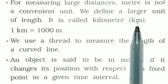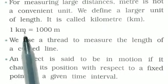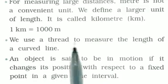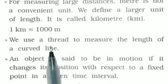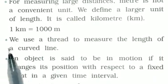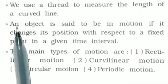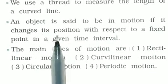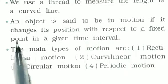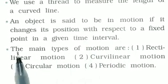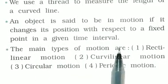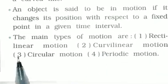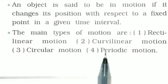For measuring large distances, we use kilometers. An object is said to be in motion if it changes its position with respect to a fixed point in a given time interval. The main types of motion are: rectilinear motion, curvilinear motion, circular motion, and periodic motion.